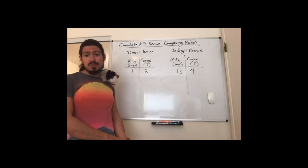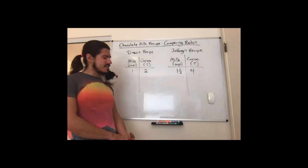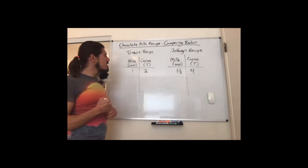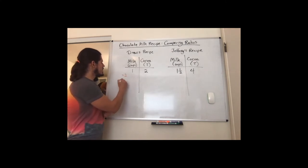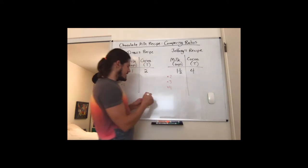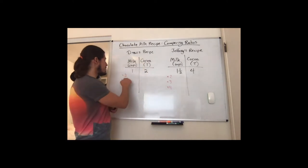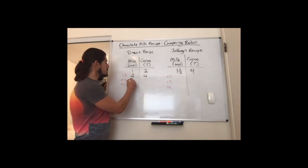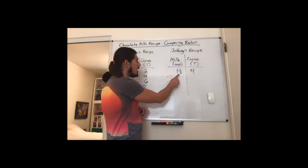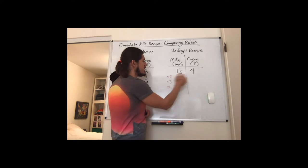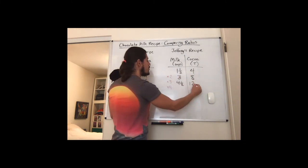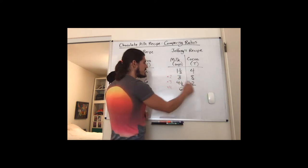What could we do to compare and find out whose recipe is more chocolatey? Let's make an equivalent ratio table for both. For my recipe: for two people it's 2 cups milk to 4 tablespoons cocoa; times three is 3 to 6; times four is 4 to 8. For Jeffrey's recipe: 1½×2 is 3 cups milk, 4×2 is 8 tablespoons cocoa; 1½×3 is 4½ cups milk, 4×3 is 12 tablespoons cocoa; 1½×4 is 6 cups milk, 4×4 is 16 tablespoons cocoa.